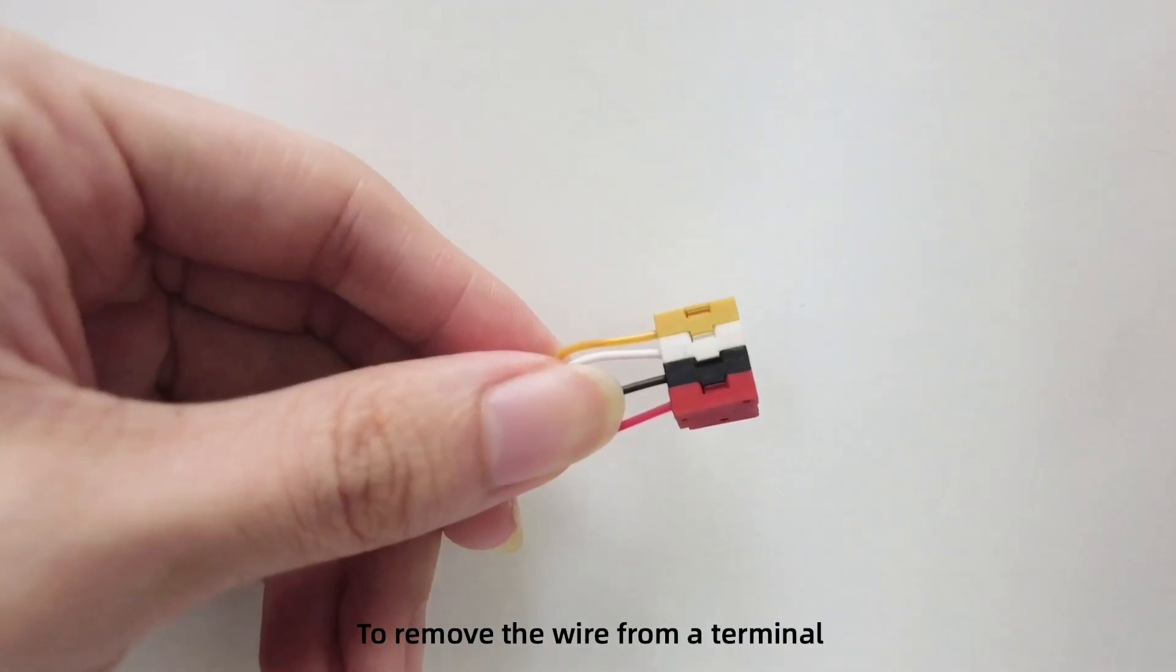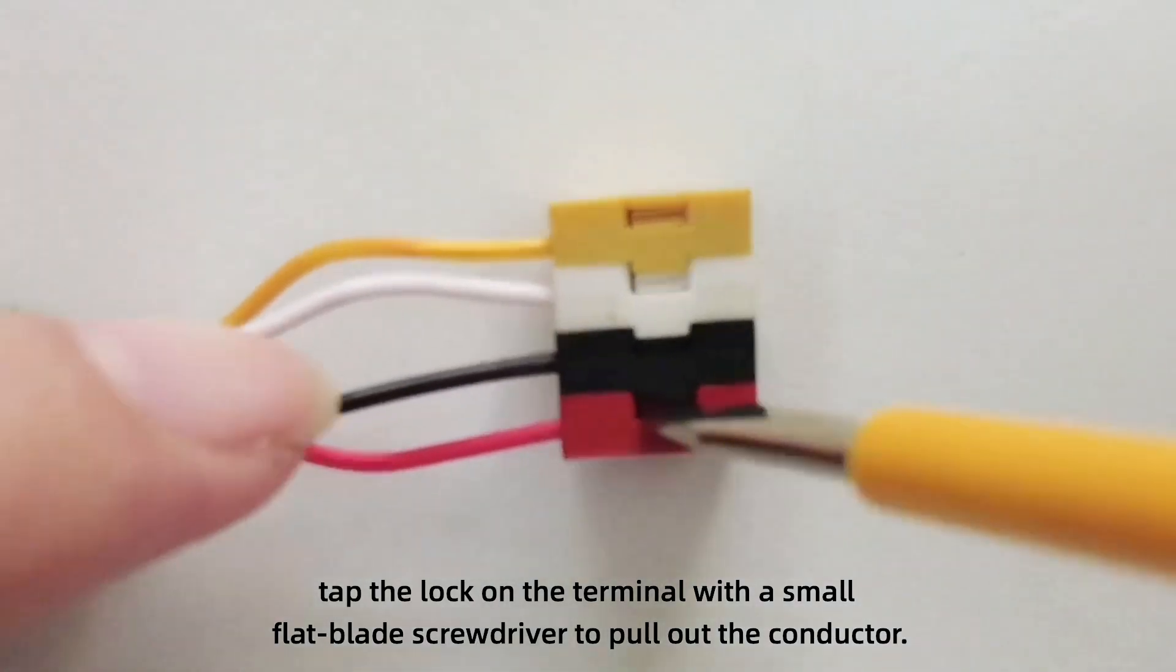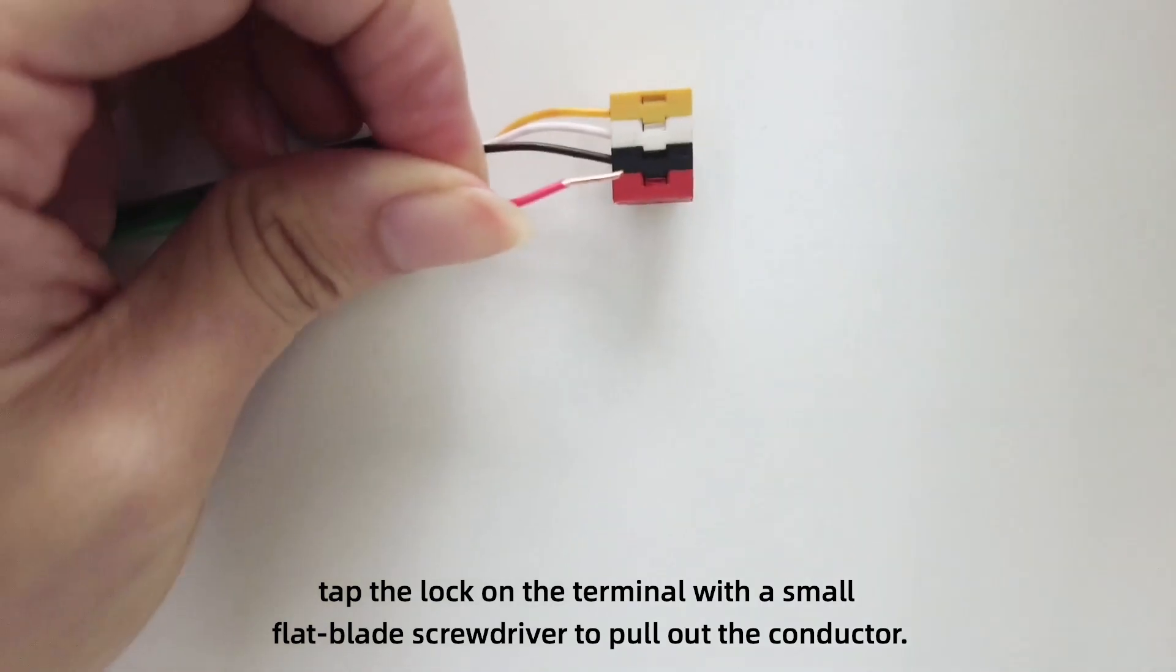To remove the wire from a terminal, tap the lock on the terminal with a small flat blade screwdriver to pull out the conductor.